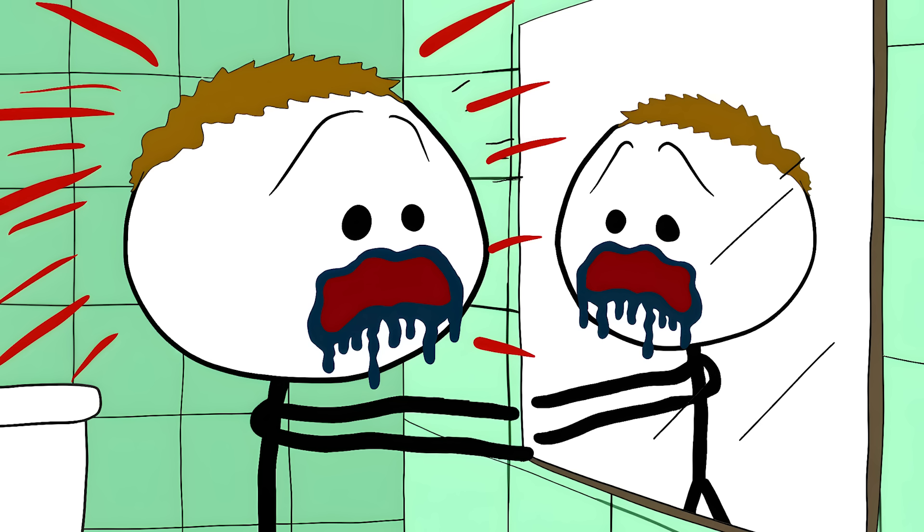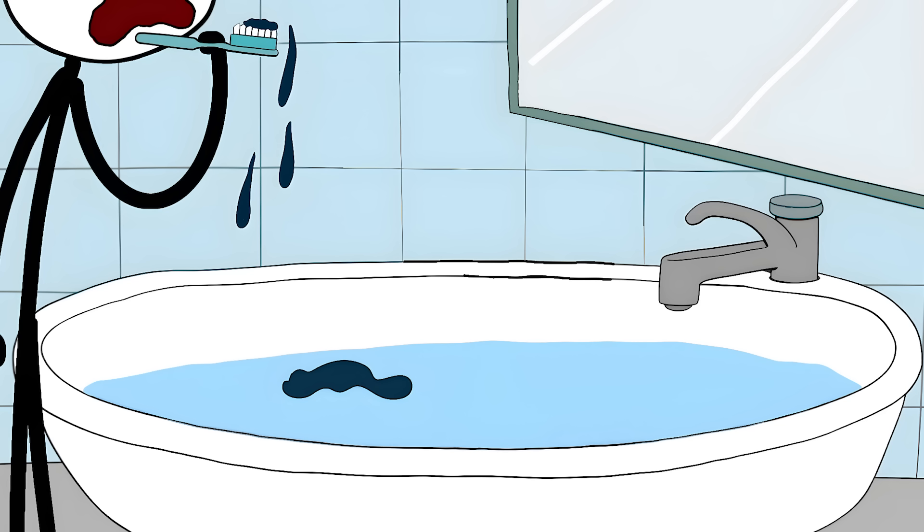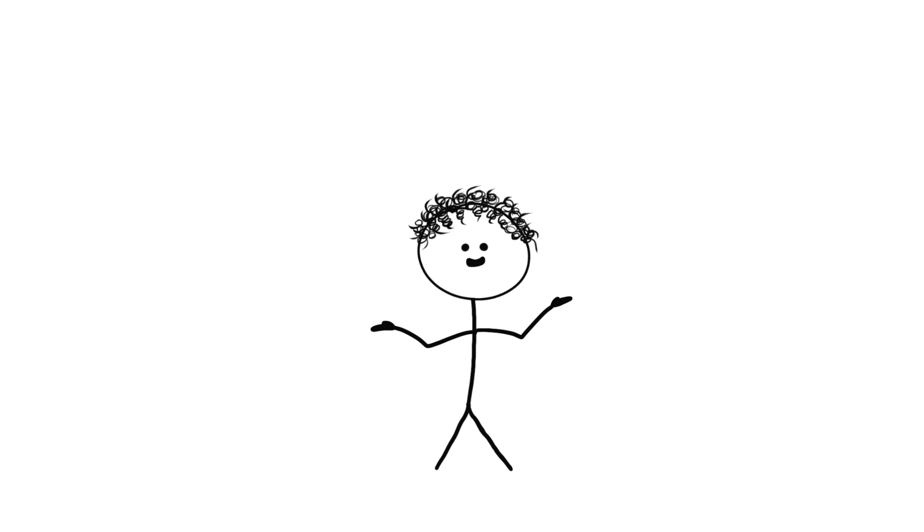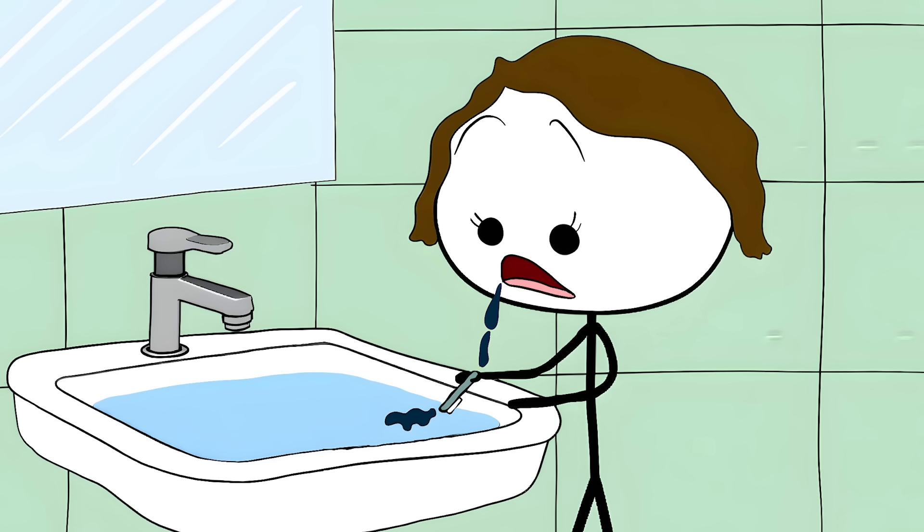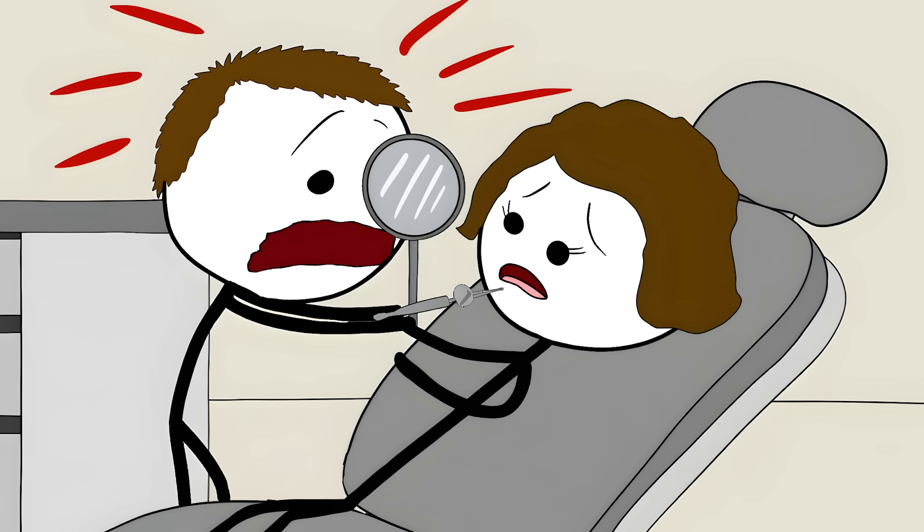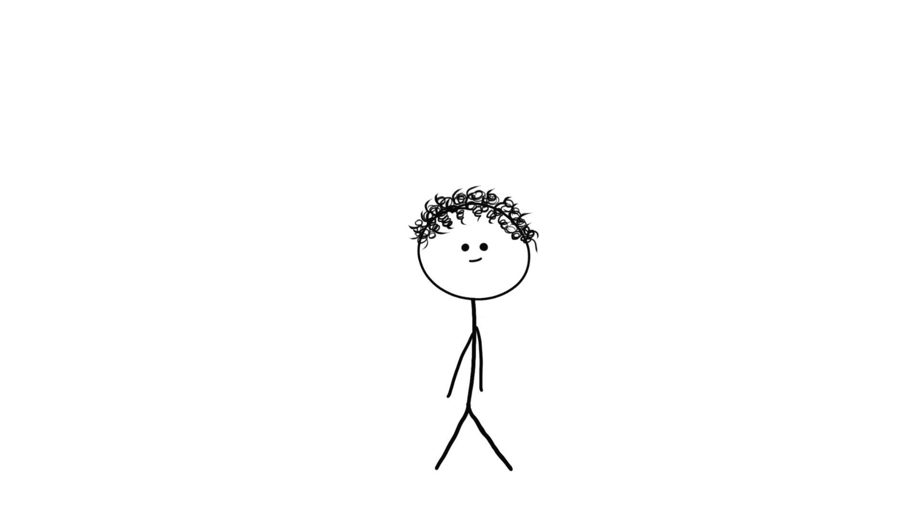The gums that bleed easily. So you're brushing your teeth and you notice a bit of pink in the sink. No big deal, just brush better next time. Well, that's what Sarah thought too. She kept ignoring those bloody sinks until one day her dentist noticed something weird about her gums. They weren't just bleeding, they were trying to tell her something much scarier.